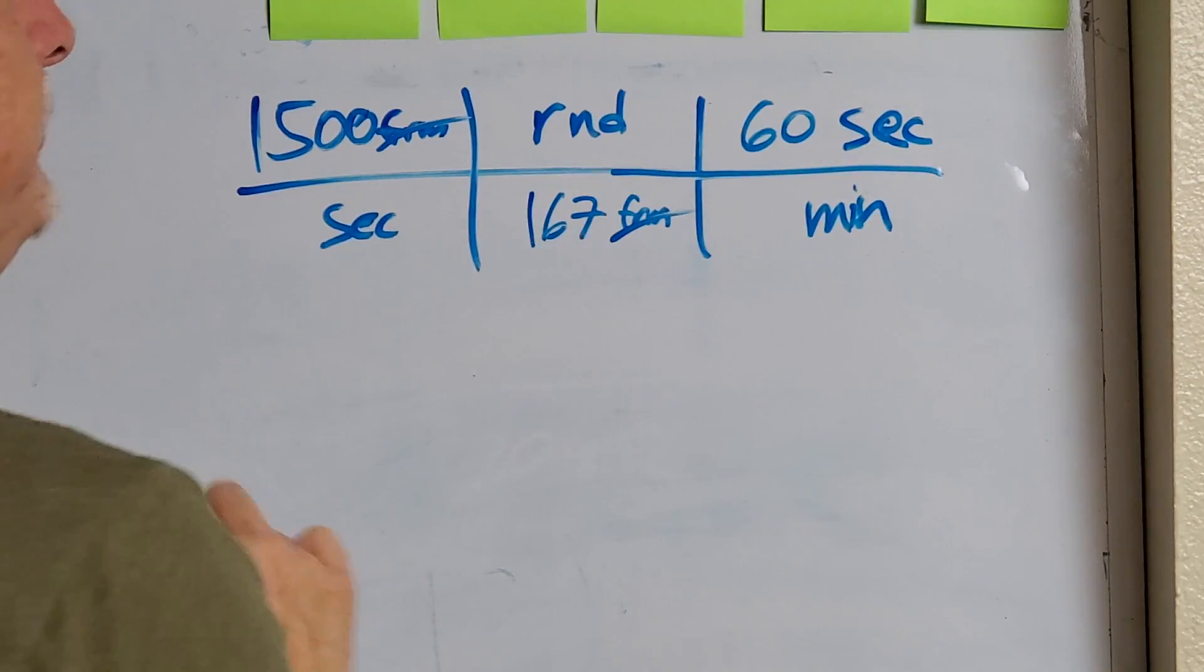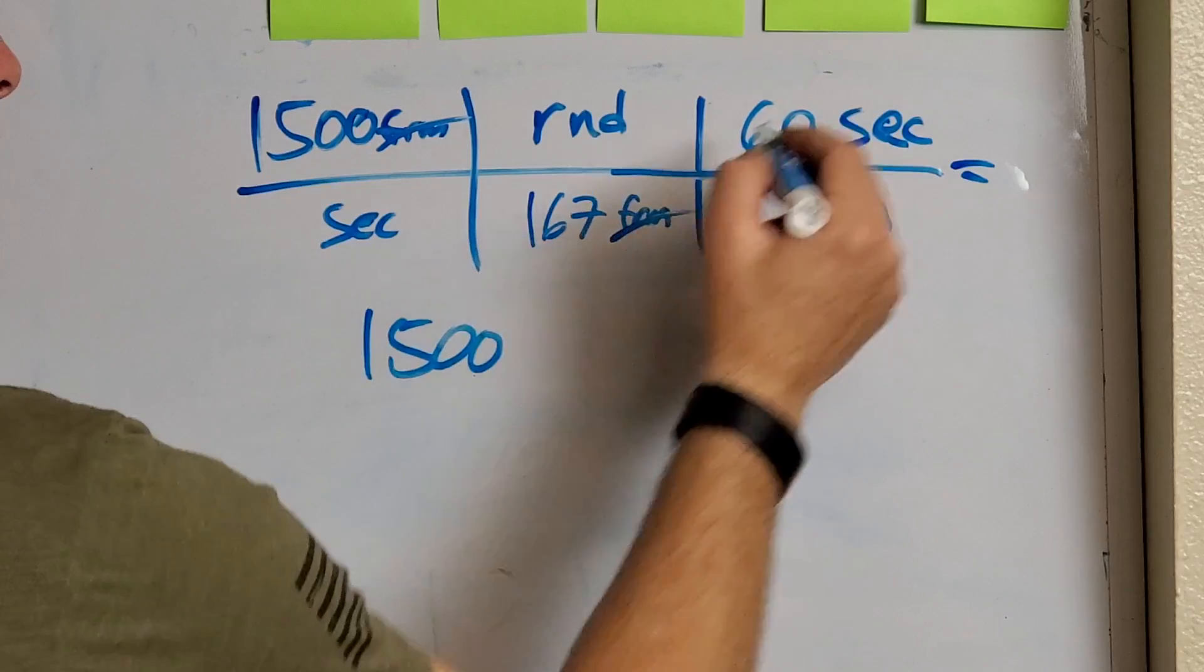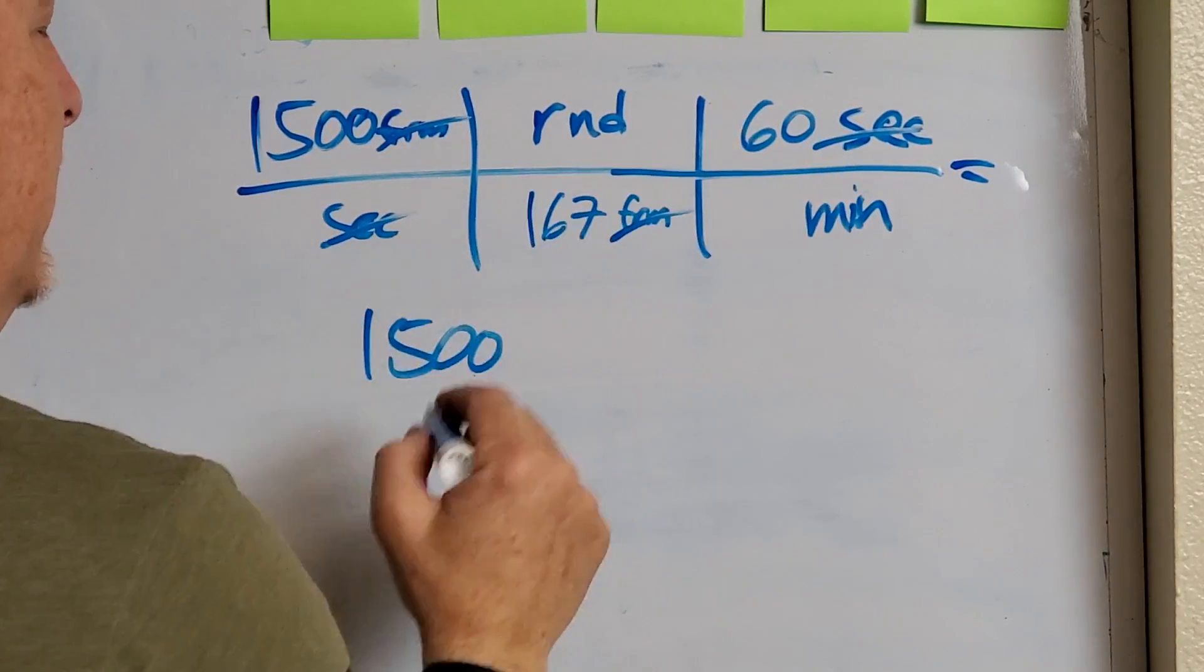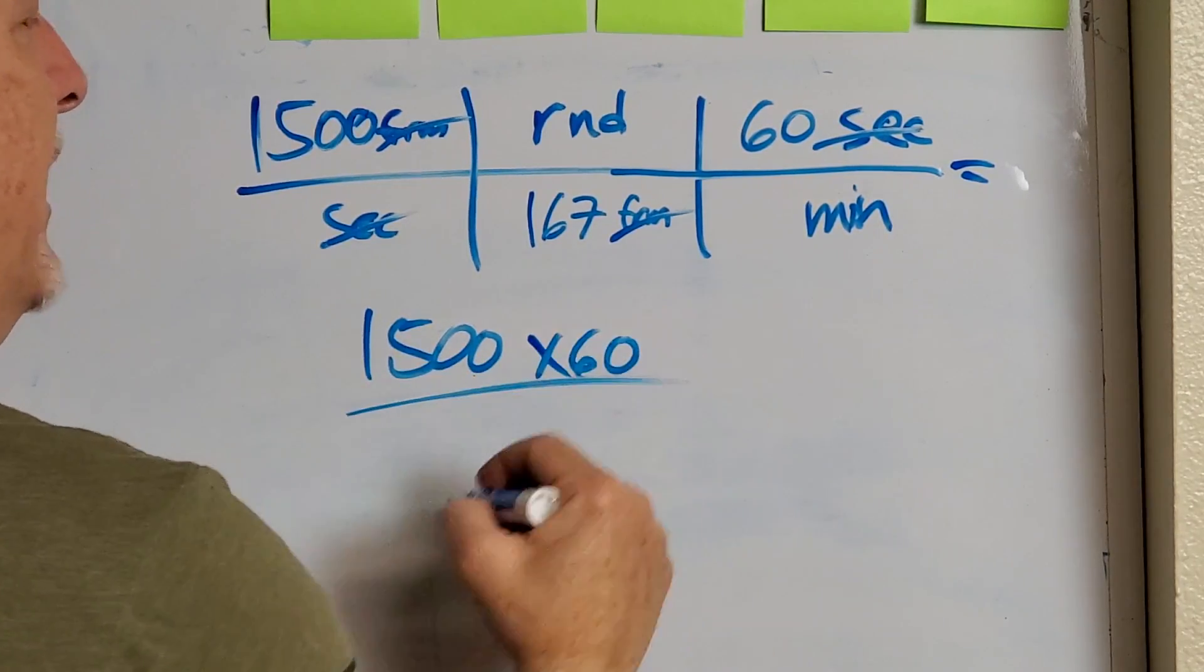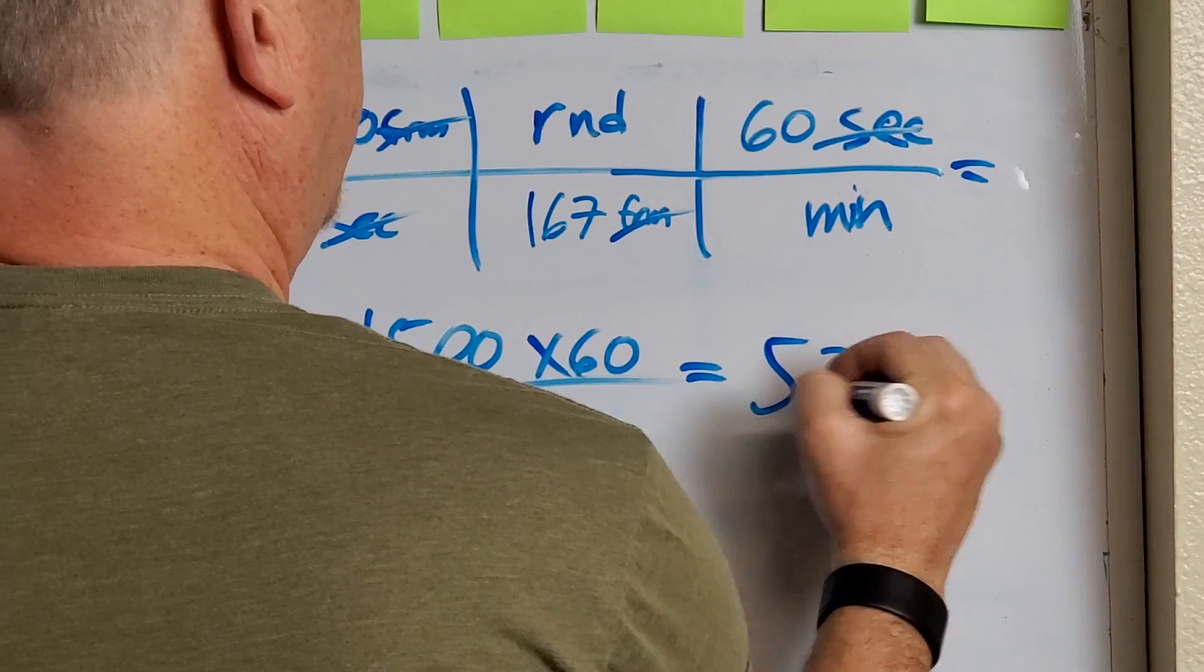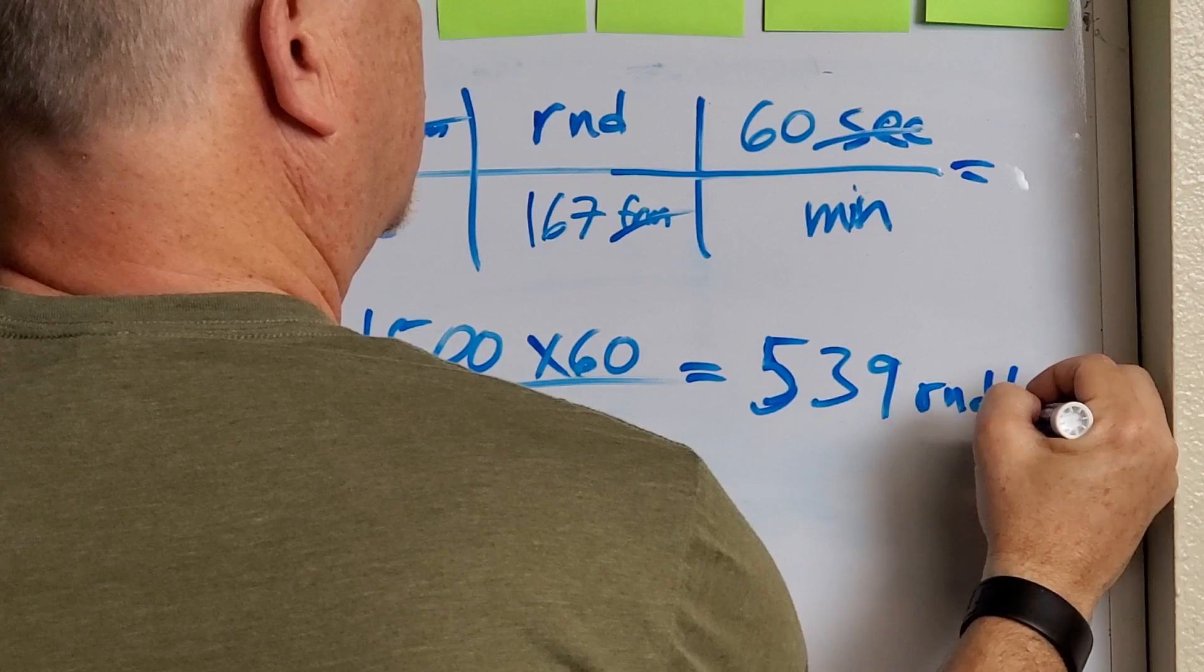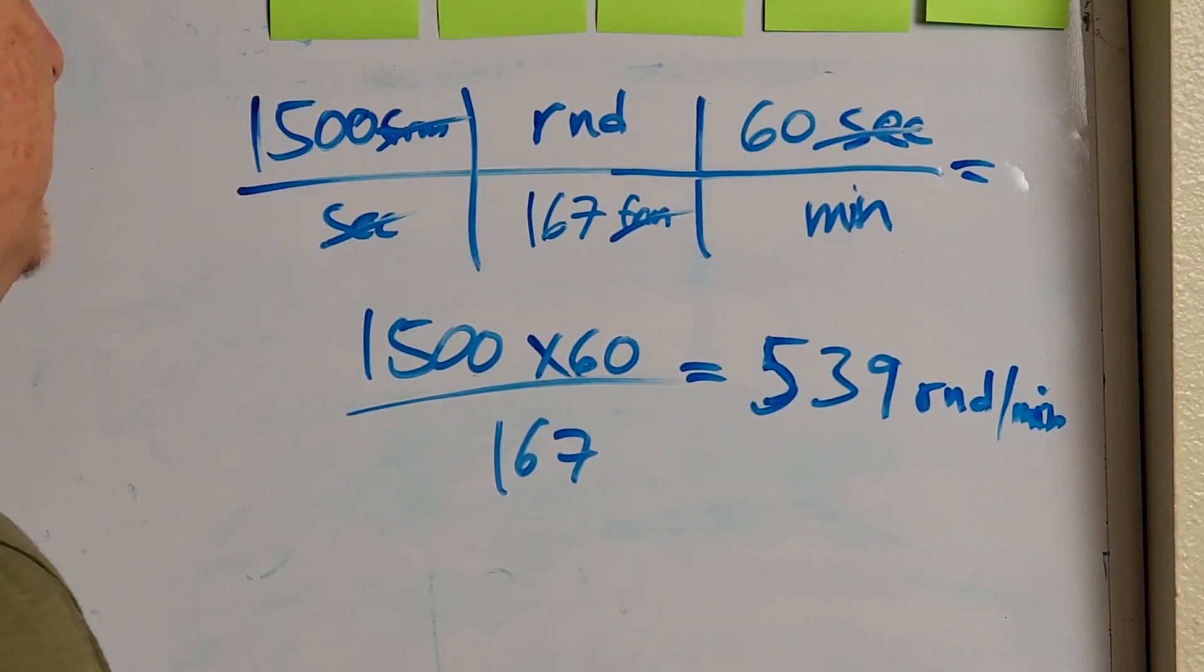Now, again, I'm not going to do the math in my head. And don't forget, we cross cancel everything. So we've got, the only thing we have left is rounds per minute. So we've got 1500 times 60 divided by 167, 539. There you go. 539 rounds per minute. That's pretty slow. But that's what it was.